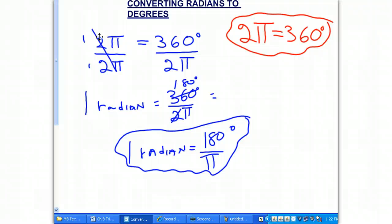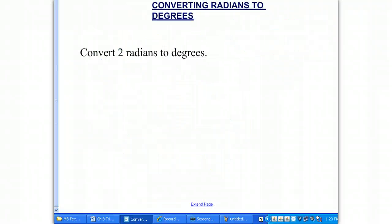So now that we know that 1 radian is equal to 180 degrees over π, we could do some problems. Here's a problem: Convert 2 radians to degrees.